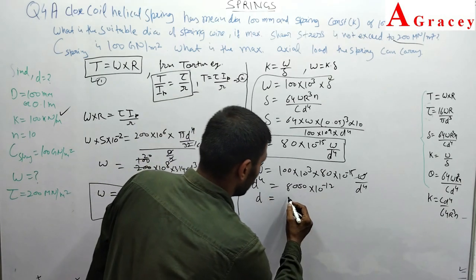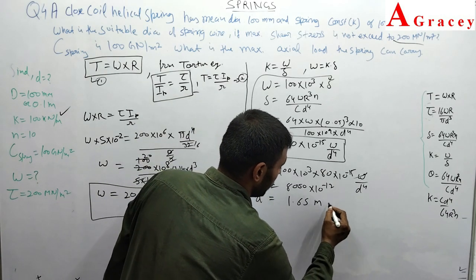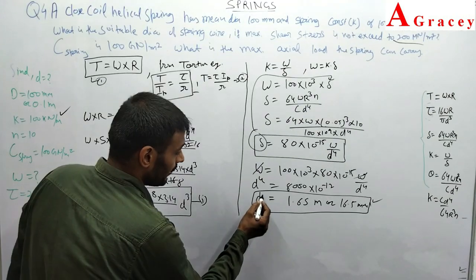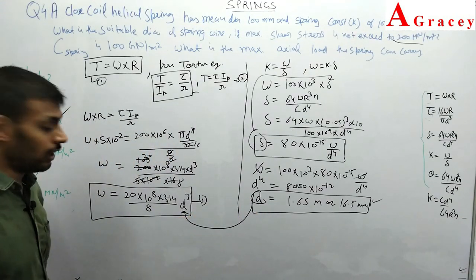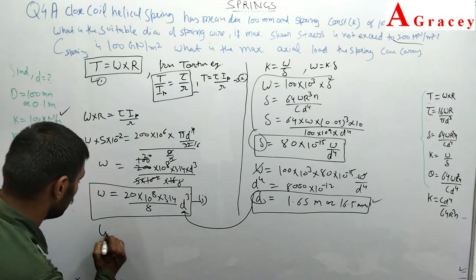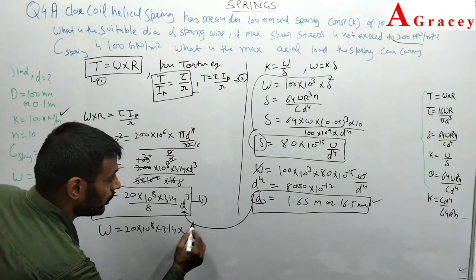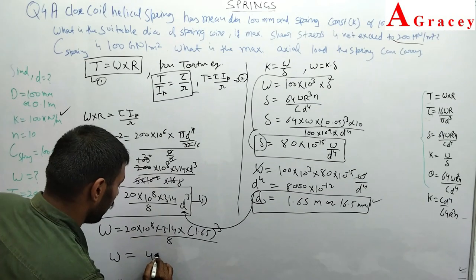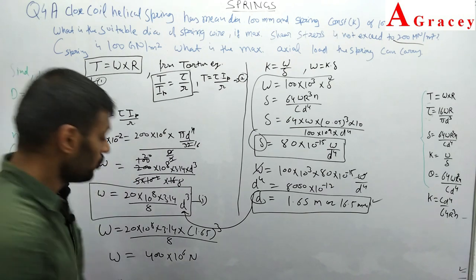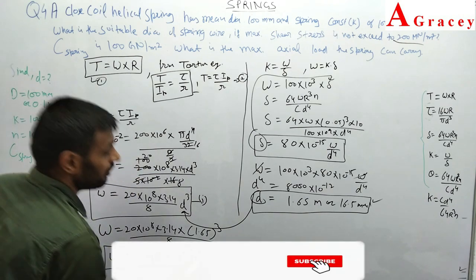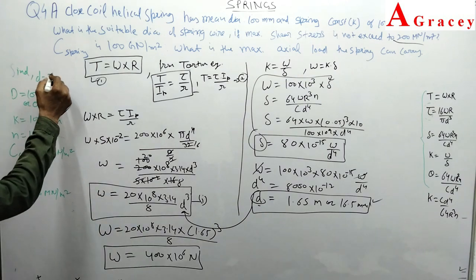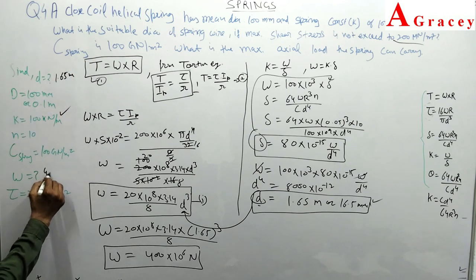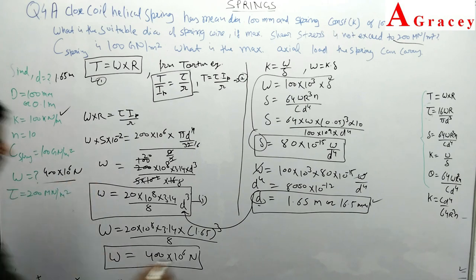Solving d⁴ = 8 × 10⁻⁹ gives d ≈ 0.0165 m = 16.5 mm. That is the wire diameter. Substituting d back into equation 1 to find W: W = 20 × 10⁸ × 3.14 × (0.0165)³ / (8 × 0.05) ≈ 400 × 10 newton. So d = 16.5 mm and W is approximately 4000 newton.